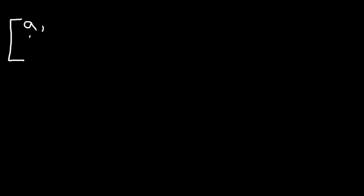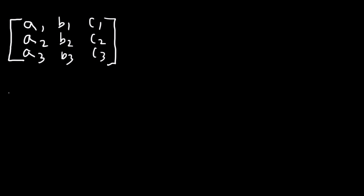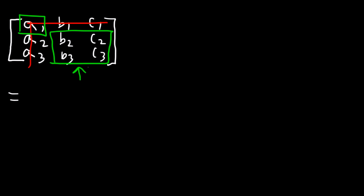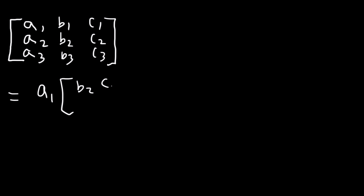Now what about a 3x3 matrix? Let's say this is A1, A2, A3, and then B1, B2, B3, C1, C2, C3. So let's go over the formula first. The first thing you want to do is get rid of the first row and the first column, and notice what you have left over: B2, C2, B3, C3. So you're going to use A1, and it's going to be reduced to a 2x2 matrix — A1 times [B2, C2; B3, C3].